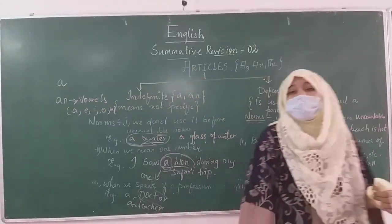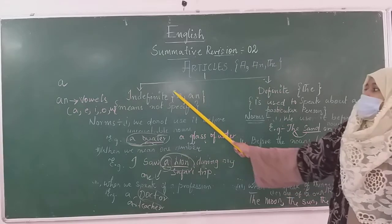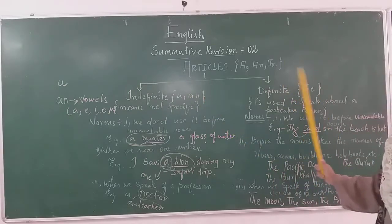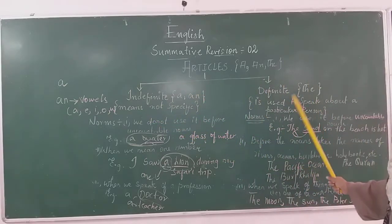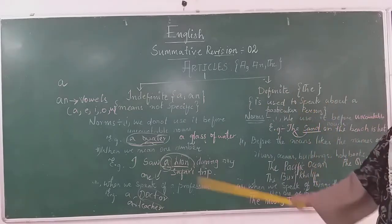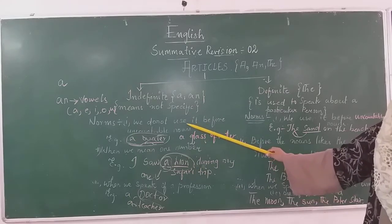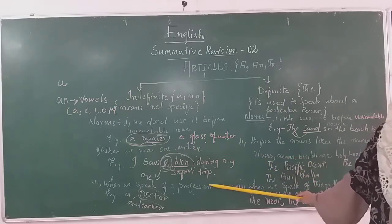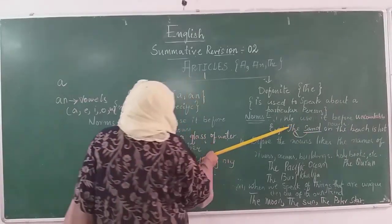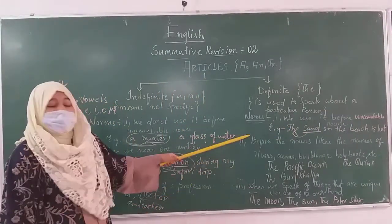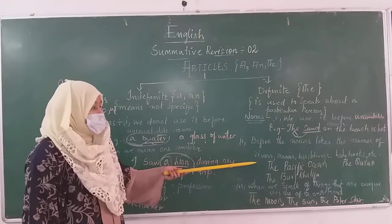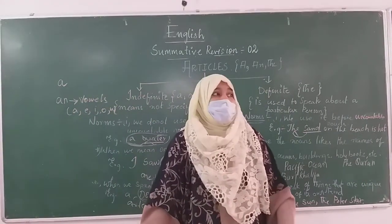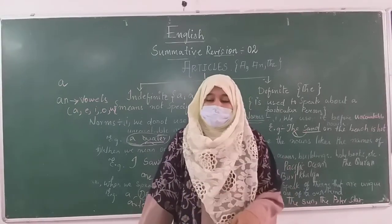So hopefully everyone understood. Articles are nothing but A and AN. These are divided into two types: indefinite and definite. The indefinite articles are A and AN — they are not specific. The definite article is THE — it is used for a particular person or thing. The indefinite article is not used before uncountable nouns; it is used when we want to describe one number or speak about a profession. The definite article THE is used before uncountable nouns, names of rivers and oceans, and things that are unique and one of their own kind. I will meet you in the next class.